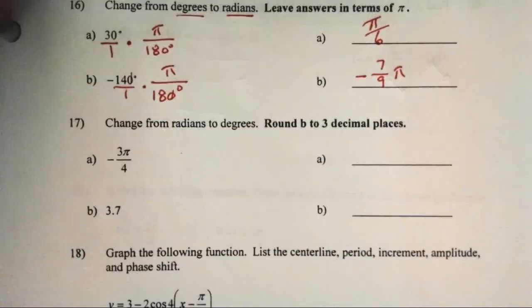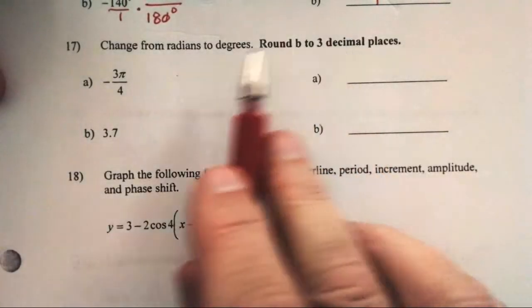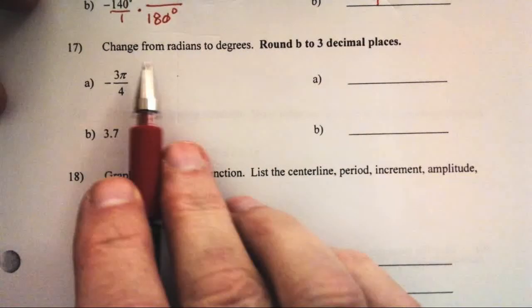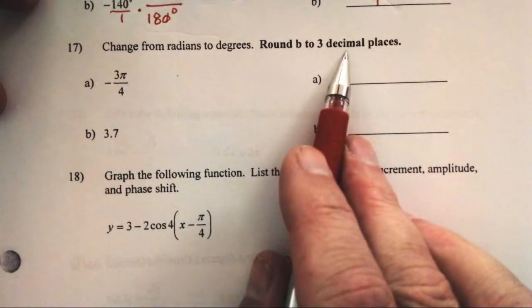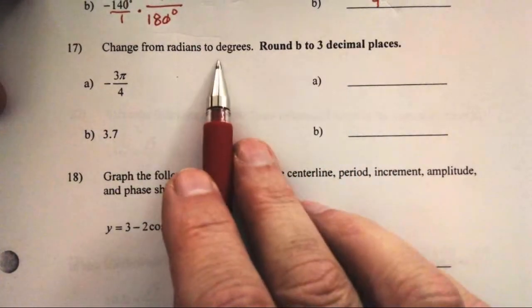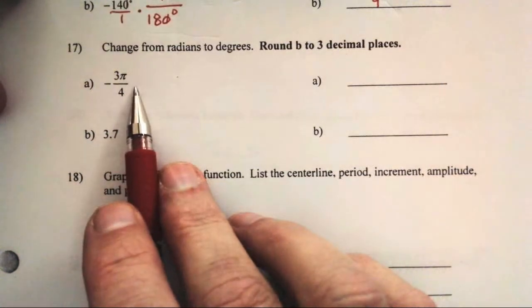Number 17: round to three decimal places — that's a pretty strong indicator we're going to be using a calculator. We need to change from radians to degrees.